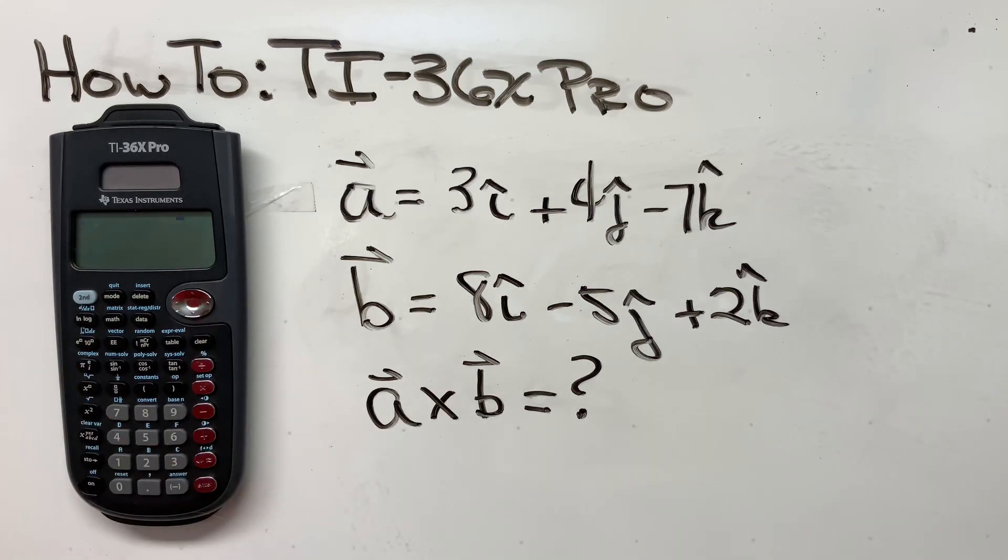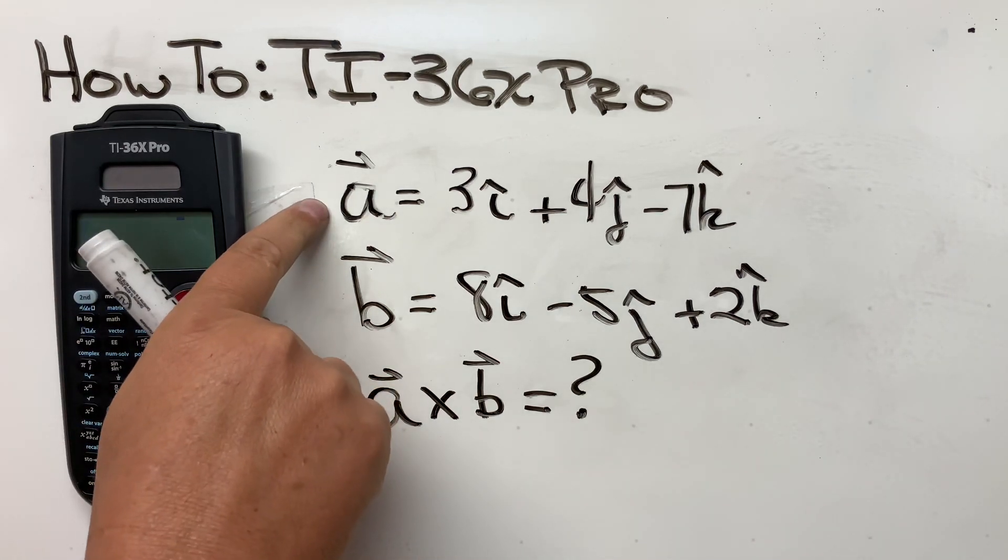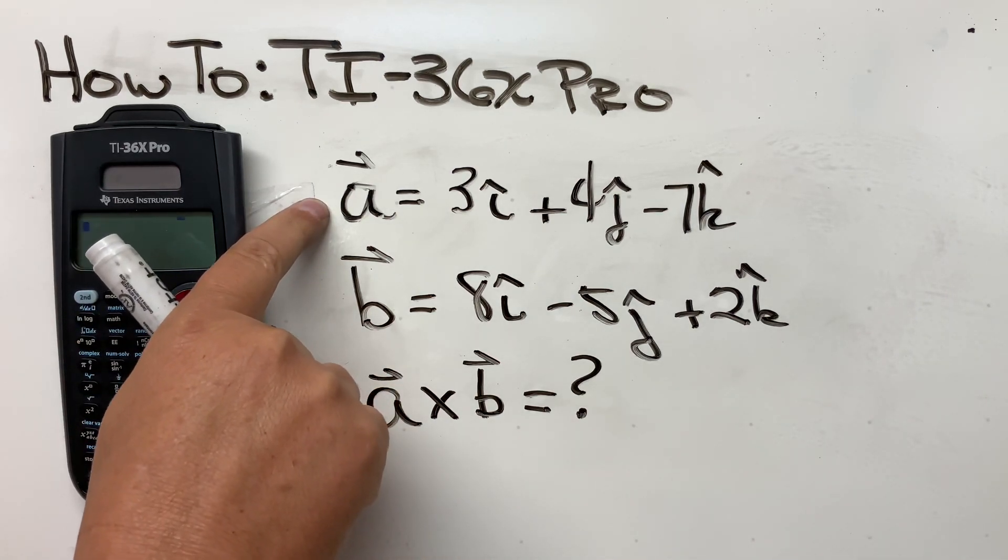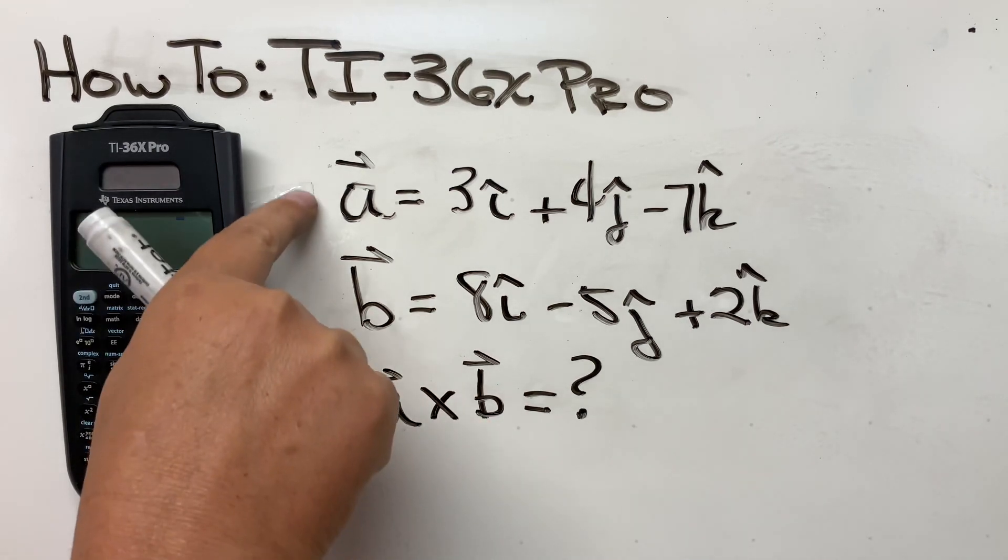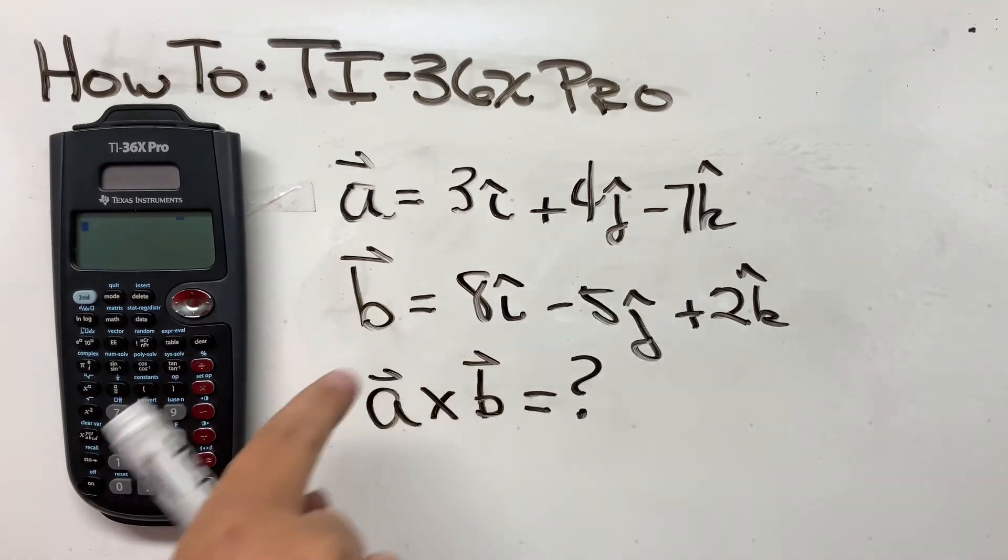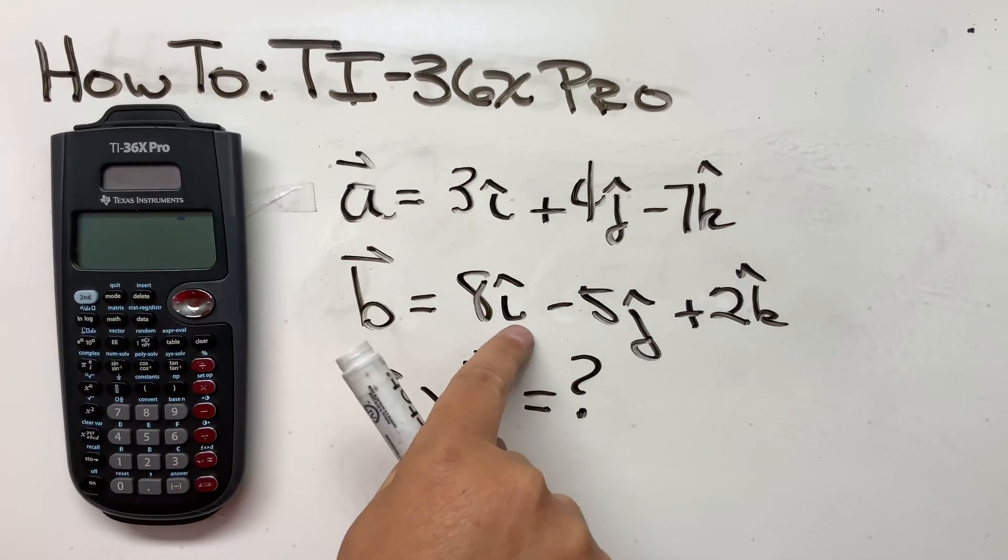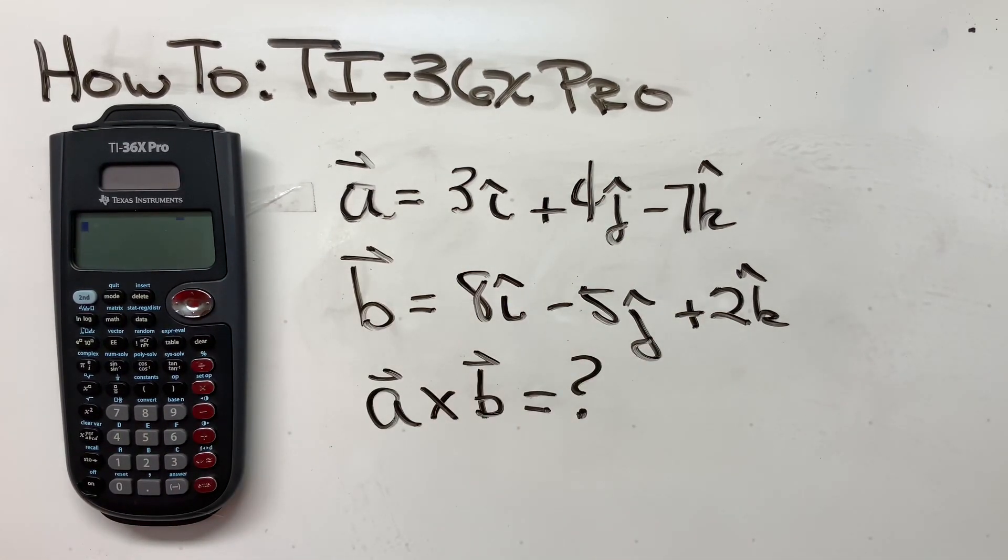Welcome back. Another quick tutorial on how to use your TI-36 Pro. Today, we're doing a little matrix math. How do you do a cross product of two vectors? How can I cross vector A and vector B? So here's vector A, 3i plus 4j minus 7k. Here's vector B, 8i minus 5j plus 2k.